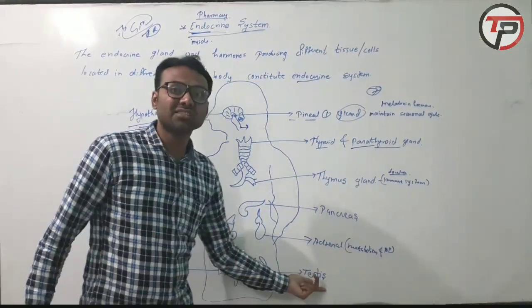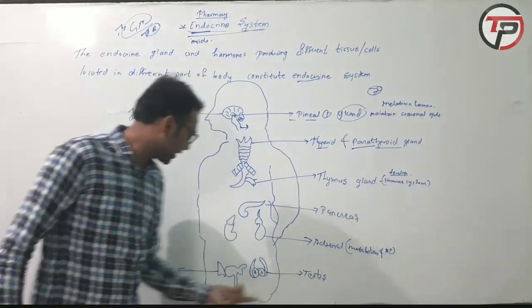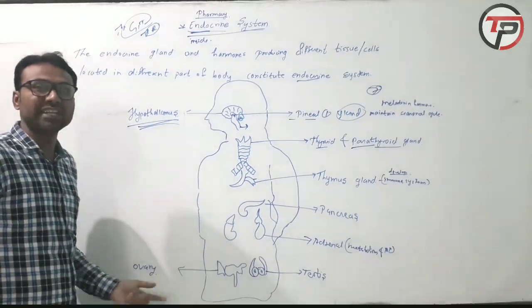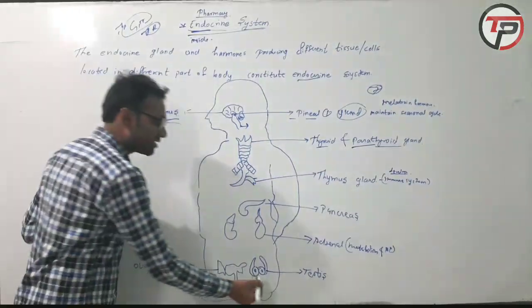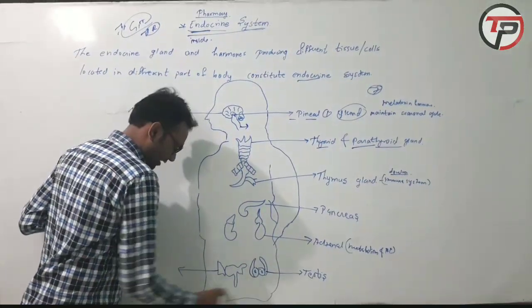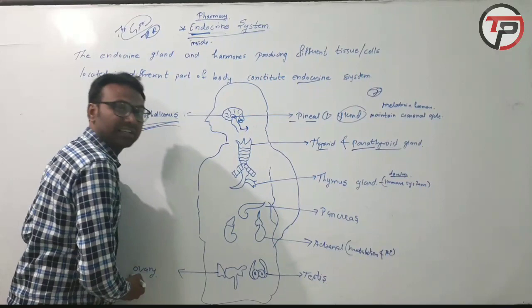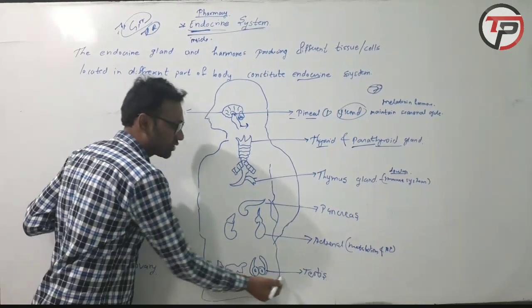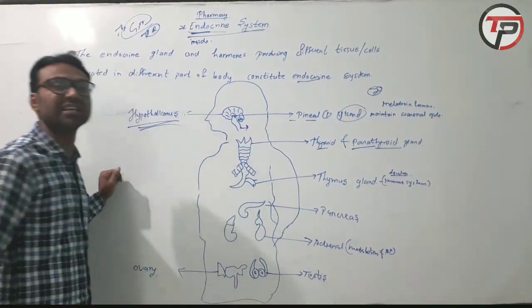Also, testis in males and ovaries in females — these are very important glands. These are the sexual glands located at the base of the body, below the abdominal cavity.